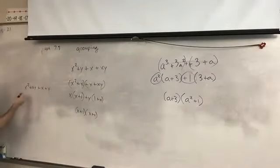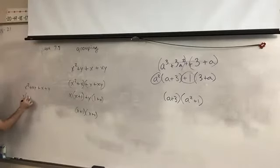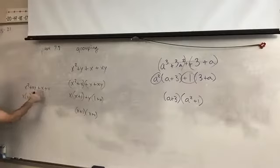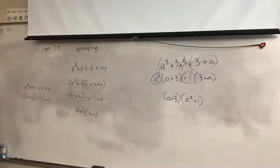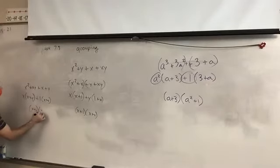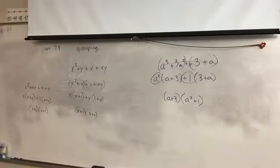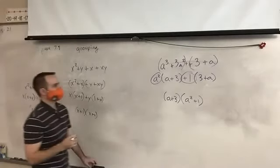Let's look at the other arrangement. We combine these first two — a GCF of x leaves x plus y in the parentheses. The last two have no GCF other than one, and I have x plus y. They still end up the same. I end up with x plus y times x plus one. The exact same answer — it doesn't matter what order those parentheses go in.